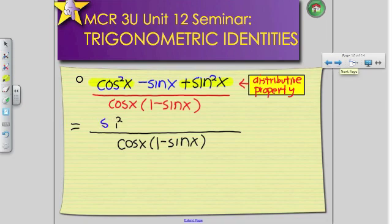Sine squared x plus cos squared x, because they're both positive. And then I have this leftover negative sine x. So I'm just shuffling it around.